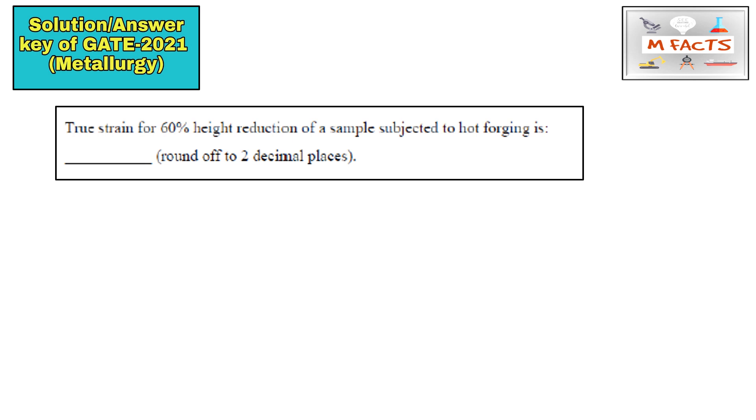The next question is also very easy. True strain for 60% height reduction of a sample subjected to hot forging. This is basically combination of mechanical metallurgy and manufacturing process. You can see that in GATE 2021 the height reduction is given. So you can find that r is given, that is 60 percent or you can take in point, that is 0.60.